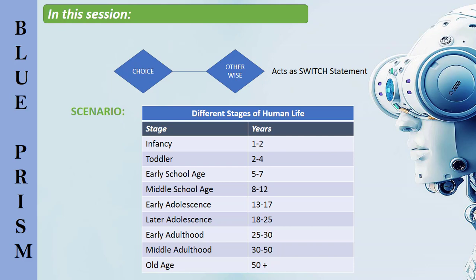On my screen there's a scenario: I want to calculate the different stages of human life. There are different stages for different year ranges — one to two is infancy, two to four is toddler, five to seven is early school age, eight to twelve is middle school age, and so on. I'm going to use the choice stage to calculate the stages based on data provided by the user.